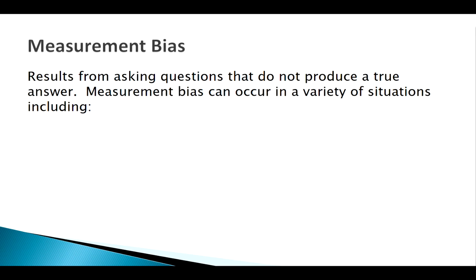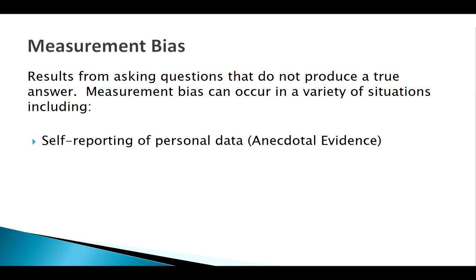Measurement bias comes from questions that aren't producing a true answer. One big thing that results in measurement bias is anecdotal evidence or self-reporting data. That's an issue because we're not always honest with our answers, and maybe someone else knows you better than you think you know yourself. Self-reporting data isn't always the best approach.